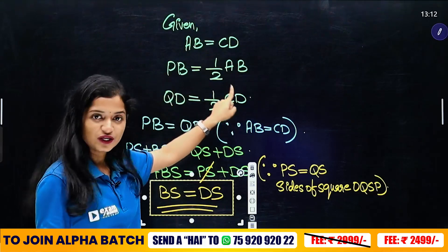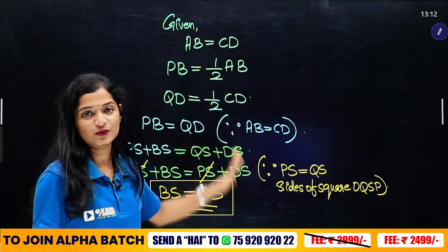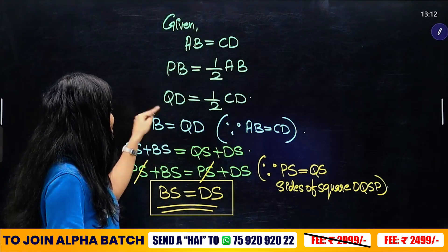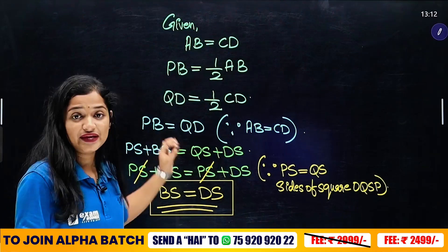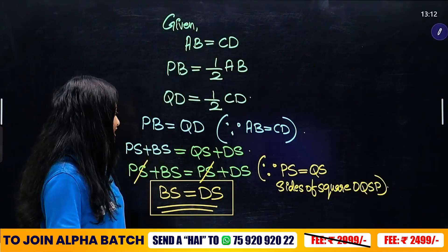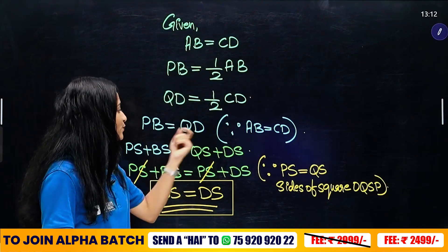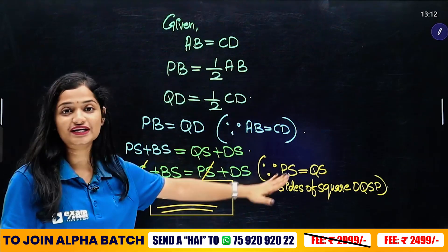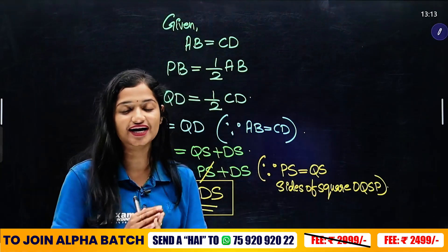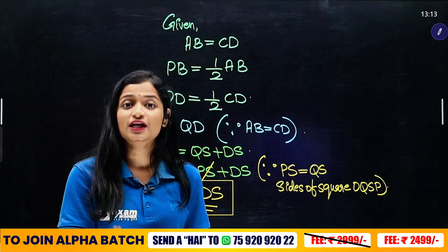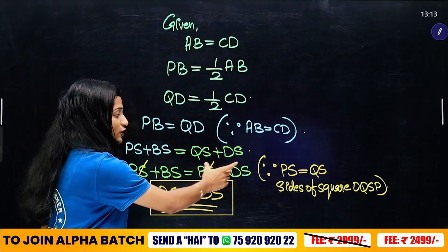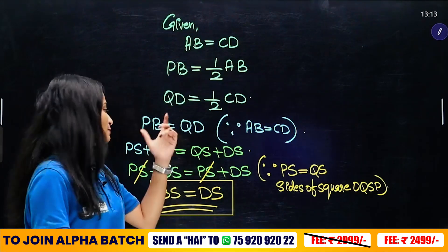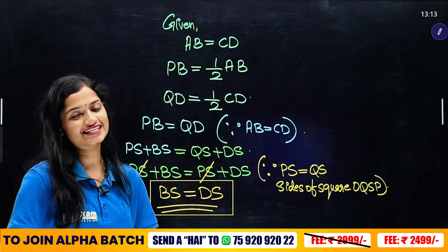So we say that PB is equal to half AB, and QD is equal to half CD. AB and CD are equal, so PB is equal to QD. PB equals PS plus BS, and QD equals QS plus DS. Since PS equals QS (sides of the square), PS plus BS equals PS plus DS. We cancel PS from both sides, giving BS equals DS. Thus proved.